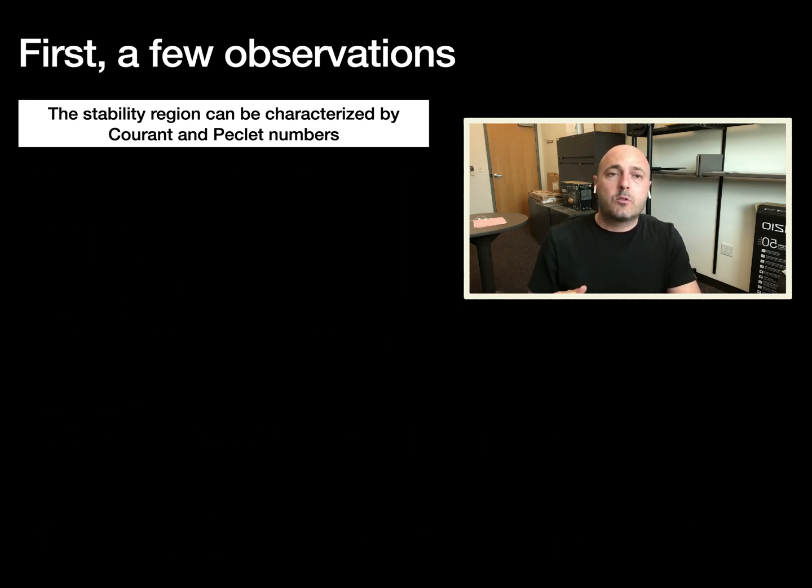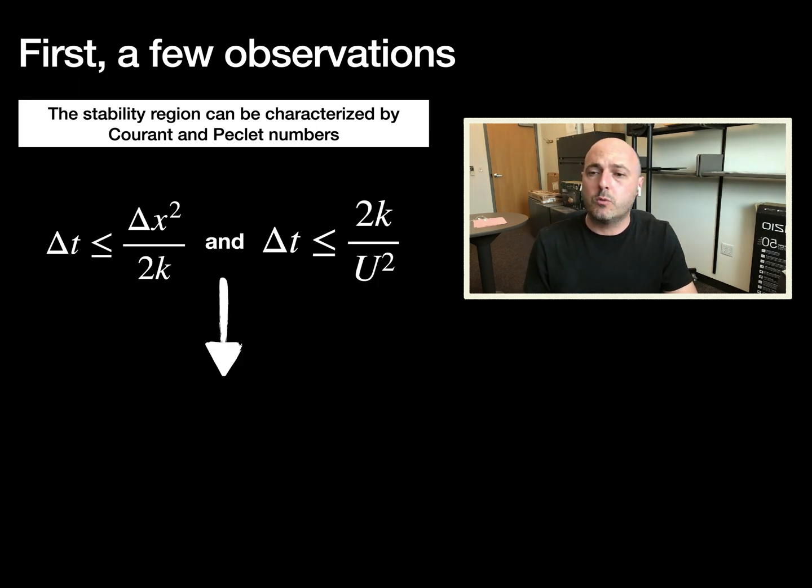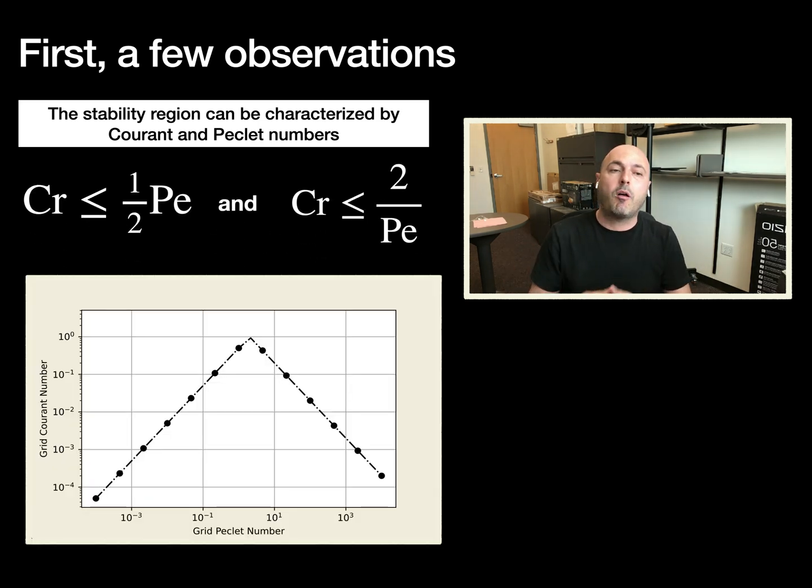Going back to the FTCS or the standard stability criteria for forward Euler, central in space on advection, for the advection-diffusion equation, those can be easily converted to Courant and Peclet number conditions. When you plot them on a Courant versus Peclet number plot, you get an invariant stability region independent of grid resolution, diffusion coefficient, and advective velocity, where you can extract directly the Courant number and therefore the stable time step given a certain Peclet number.